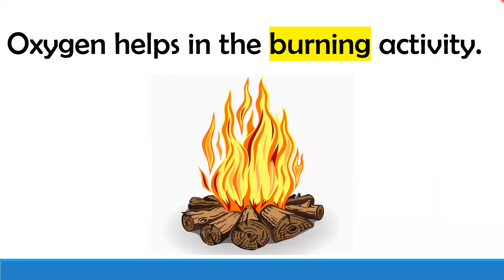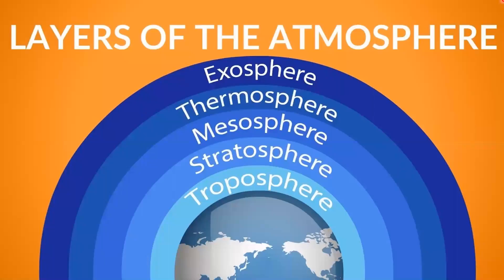Oxygen also helps in the burning activity. Now let's learn about the layers of the atmosphere. The lowest layer is known as the troposphere — this layer contains the air we breathe and we live in it. Above the troposphere lies the stratosphere, then the mesosphere, followed by the thermosphere and exosphere.